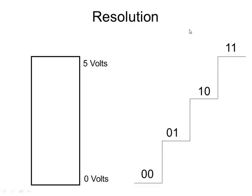You would never see a 2-bit ADC in the real world, because as you can see, it's not very useful — but it's useful for demonstration. With a 2-bit value, you can produce four different discrete values. So my resolution would be one fourth, since I have four steps — one fourth of my total range.